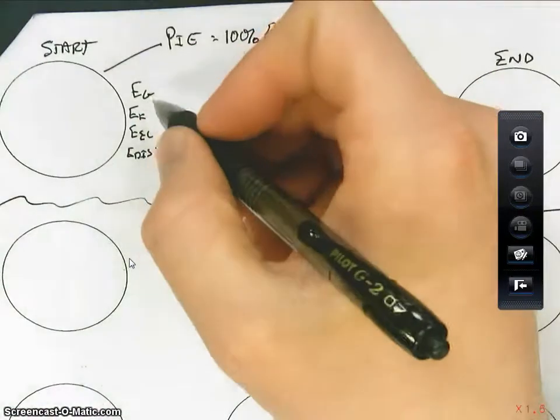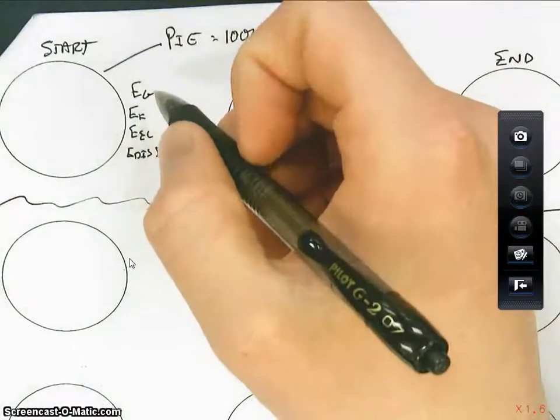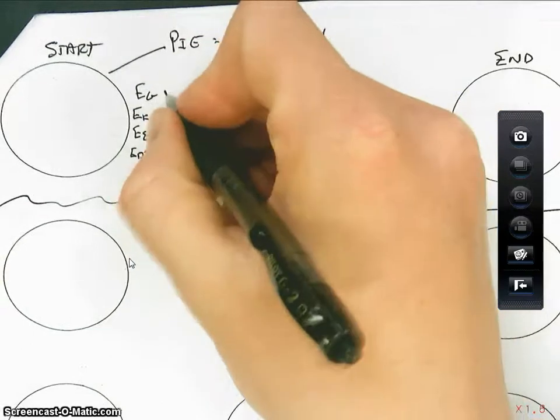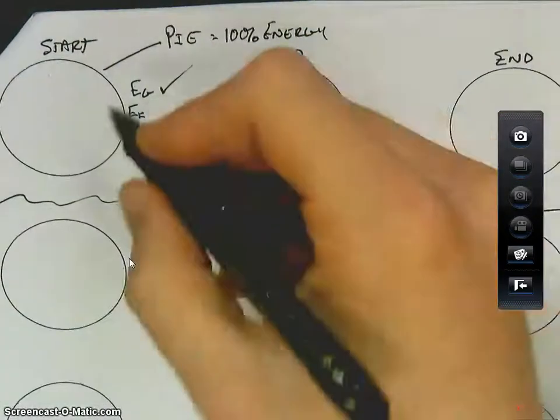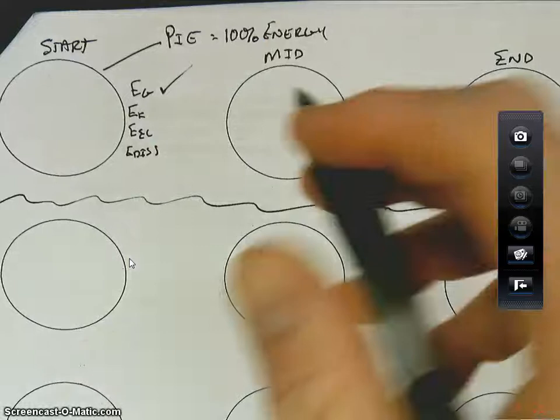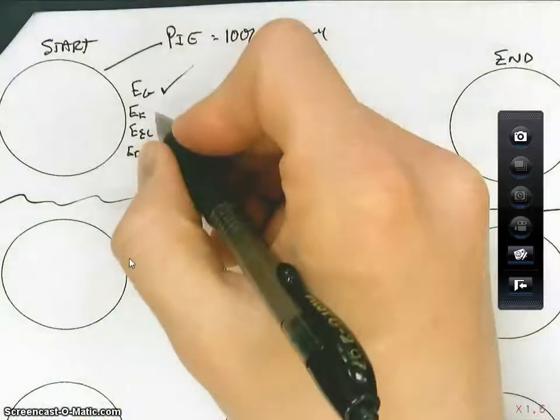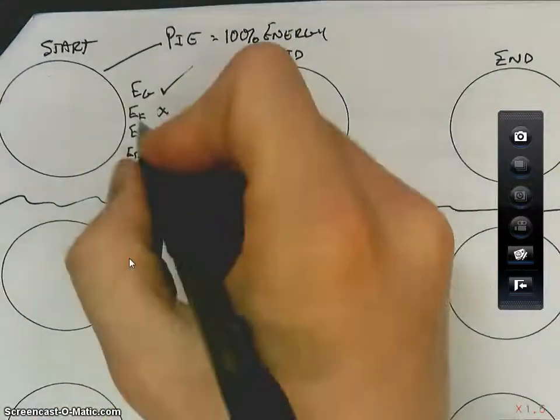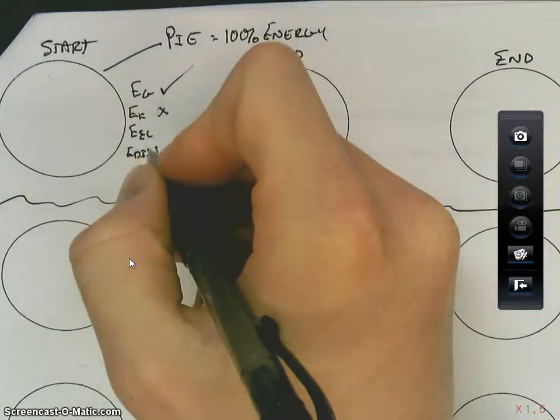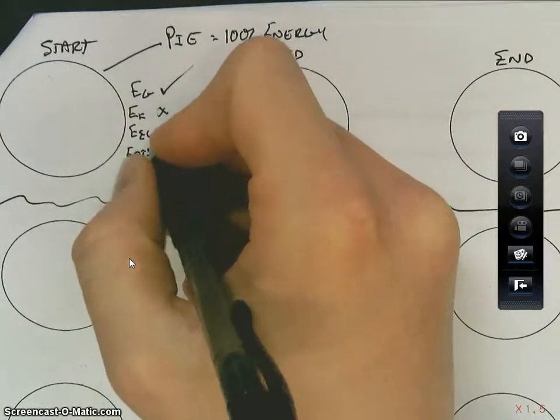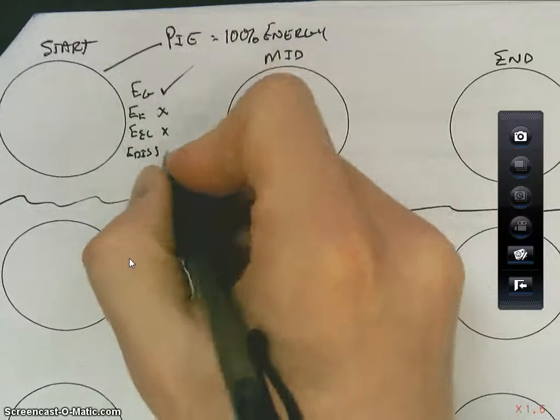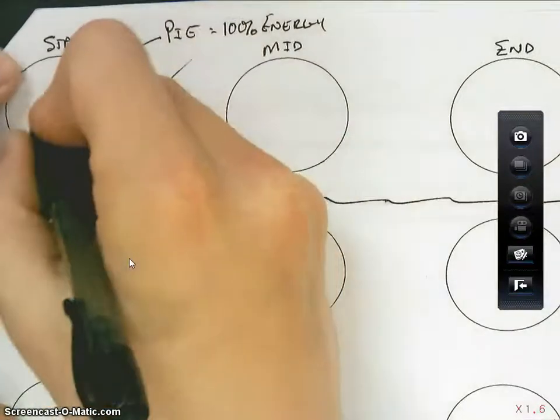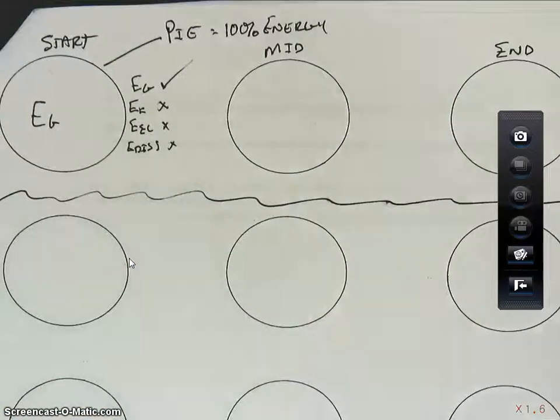EG, gravitational potential, is there any there? Well, he is off of the ground, and he's a significant distance off of the ground, so yes. He does have gravitational potential. EK, kinetic, at the beginning he's not moving, so no. EEL, I didn't see a spring, and there's nothing stretching, storing energy there, so there's none of this, and since it's at the beginning, we can't have EDIS. So for the start, we know that all of his energy is gravitational potential.